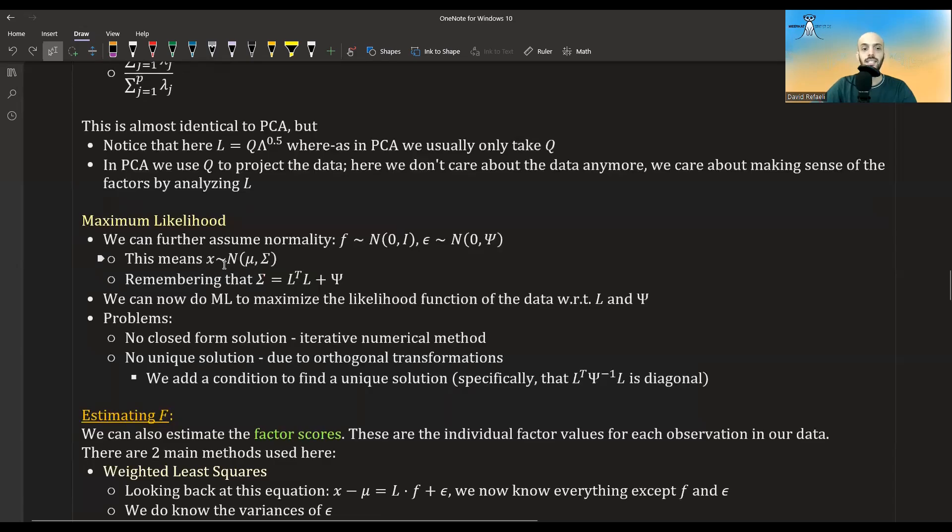So what this means, it means that X distributes normal with mu and sigma. So the mean of X we already saw is mu. And the variance of X we already calculated to be sigma, which is L transpose L plus psi. And so now what we could do is maximize the likelihood of our data, but not with regards to sigma, but with regards to L and psi.